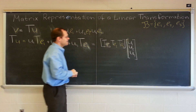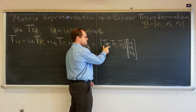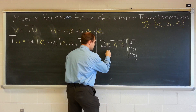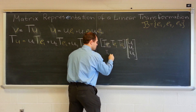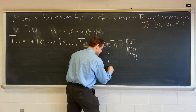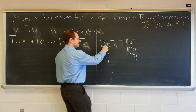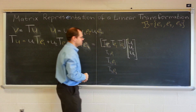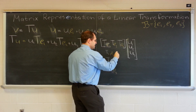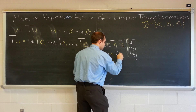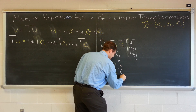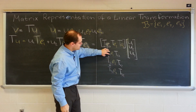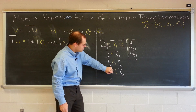Suppose that T(E1) is re-expressed in the original basis by numbers T11, T21, T31 — so T(E1) = T11·E1 + T21·E2 + T31·E3. And suppose T(E2) is represented by T12, T22, T32, and T(E3) by T13, T23, T33.